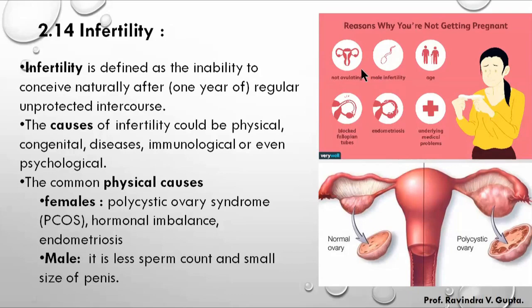There are some causes of infertility, as shown in this diagram. The causes include female ovulation issues and male infertility, which refers to low sperm count in the male.